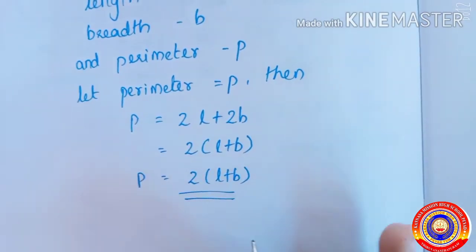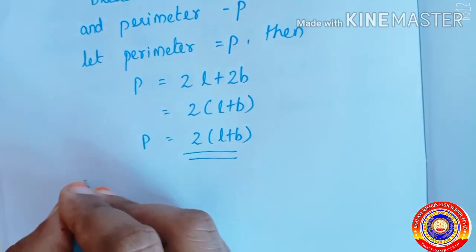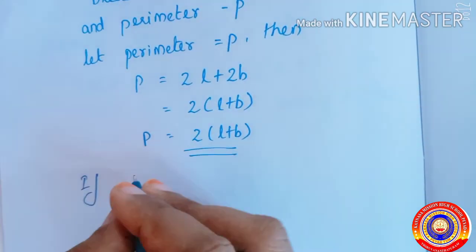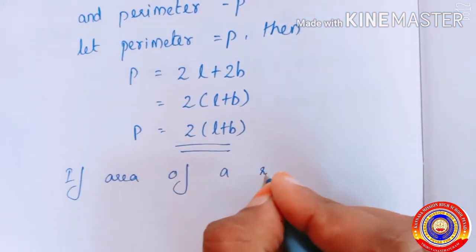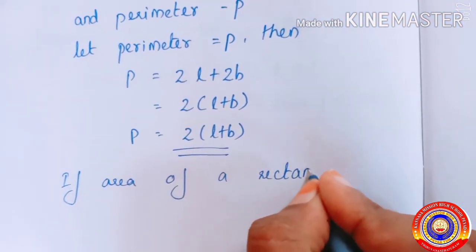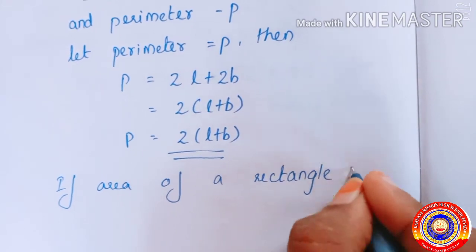Okay, let's see how we write the relation between the length of a side of a rectangle and its area using letters. If area of a rectangle is A, then A is equal to L into B.